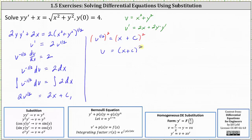Now we write the equation back in terms of x and y by replacing v with x squared plus y squared.